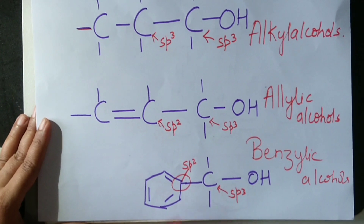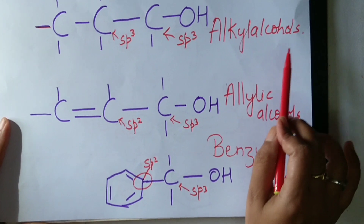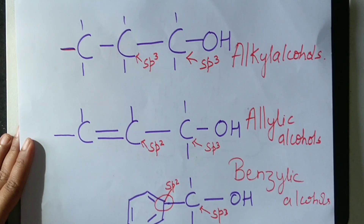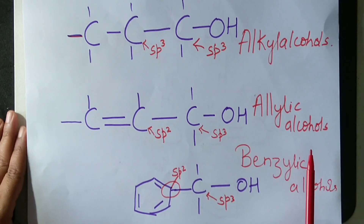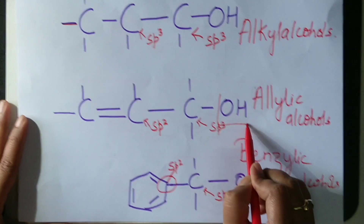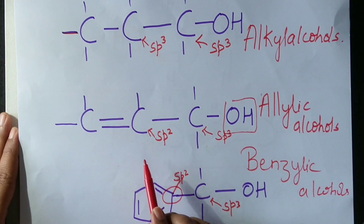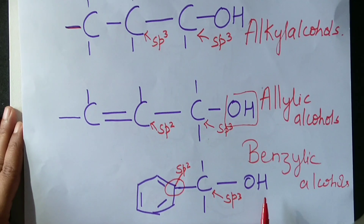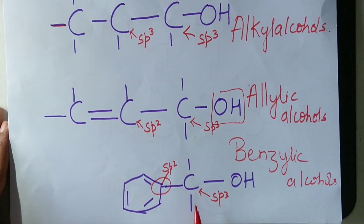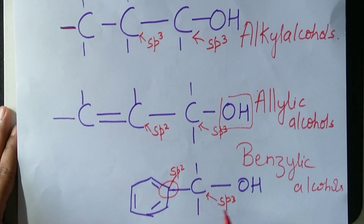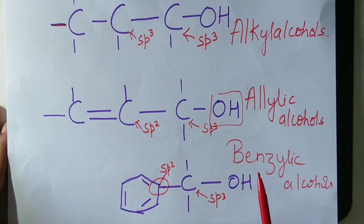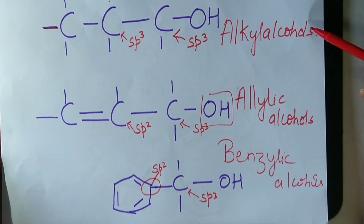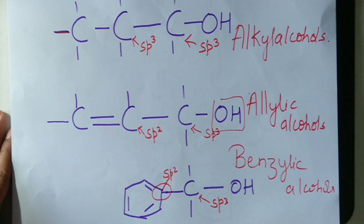To repeat: alkyl alcohols are those in which OH is attached to an SP3 carbon atom which is next to an SP3 carbon atom. Allylic alcohols are those in which OH is attached to an SP3 carbon atom which is next to an SP2 carbon atom. In benzylic alcohols, OH is attached to an SP3 carbon atom which is next to a benzene ring. Based on hybridization, alcohols can be classified as alkyl alcohols, allylic alcohols, and benzylic alcohols.